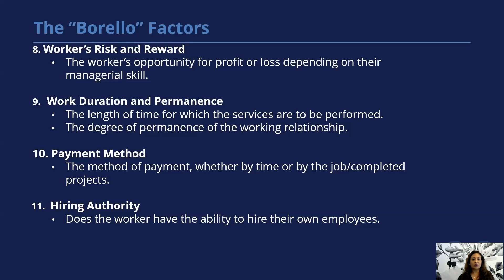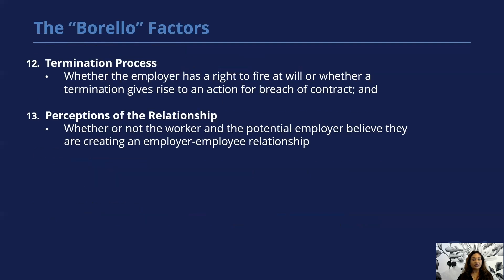The tenth factor is the method of payment — is the worker paid bi-weekly, weekly, or is it based on completion of a project or job? The eleventh is the authority to hire — does the worker have the ability to hire their own employees? The twelfth factor is the termination process — whether the employer has the right to fire or whether the termination gives rise to an action for breach of contract. And finally, the thirteenth factor is perception of the relationship — whether or not the worker and the potential employer believe they are creating an employer-employee relationship.